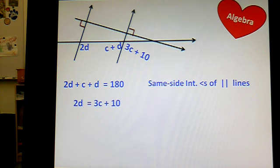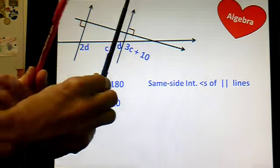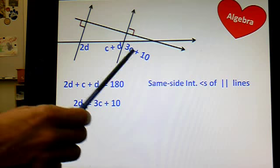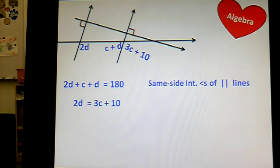Another potential equation you could have is that 2d has to be equal to 3c plus 10. Same deal, you got parallel lines here, and these angles of course, if you look at them, what kind of angles are they? Oh yeah, they're corresponding angles of parallel lines, and you can set them equal.